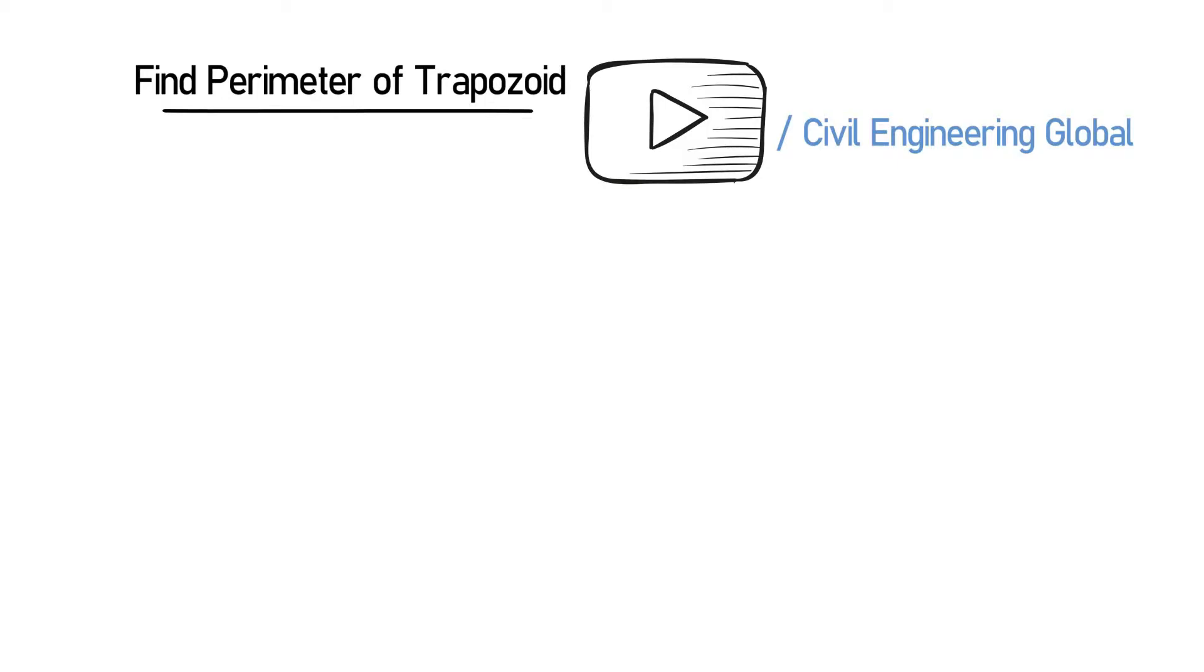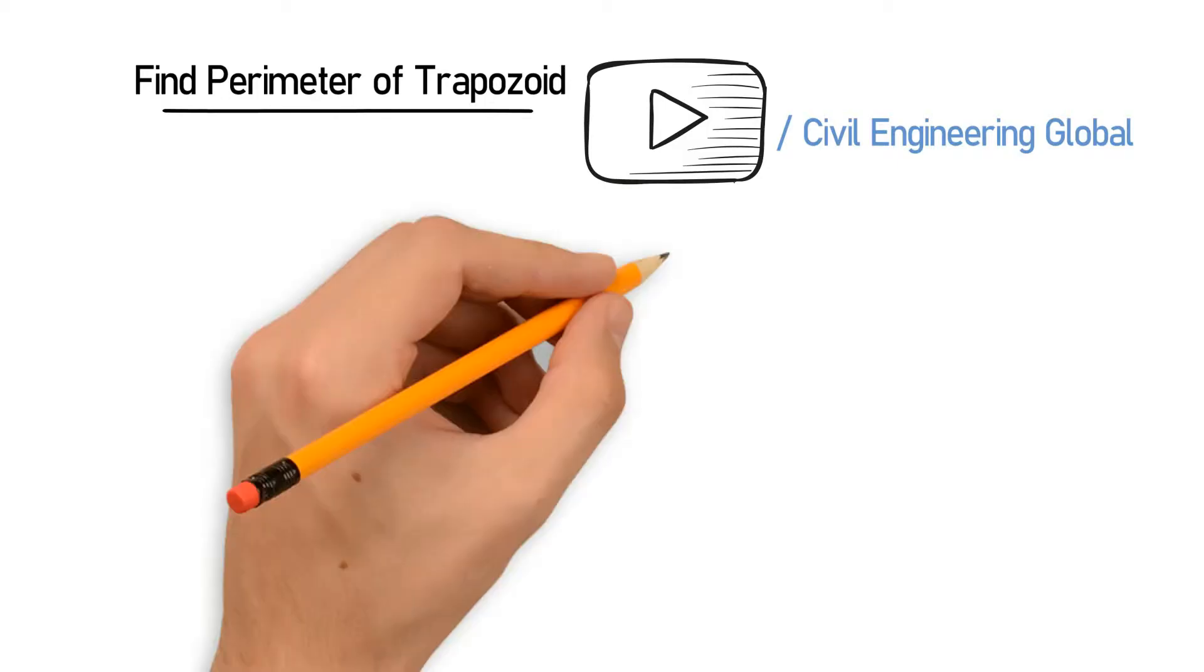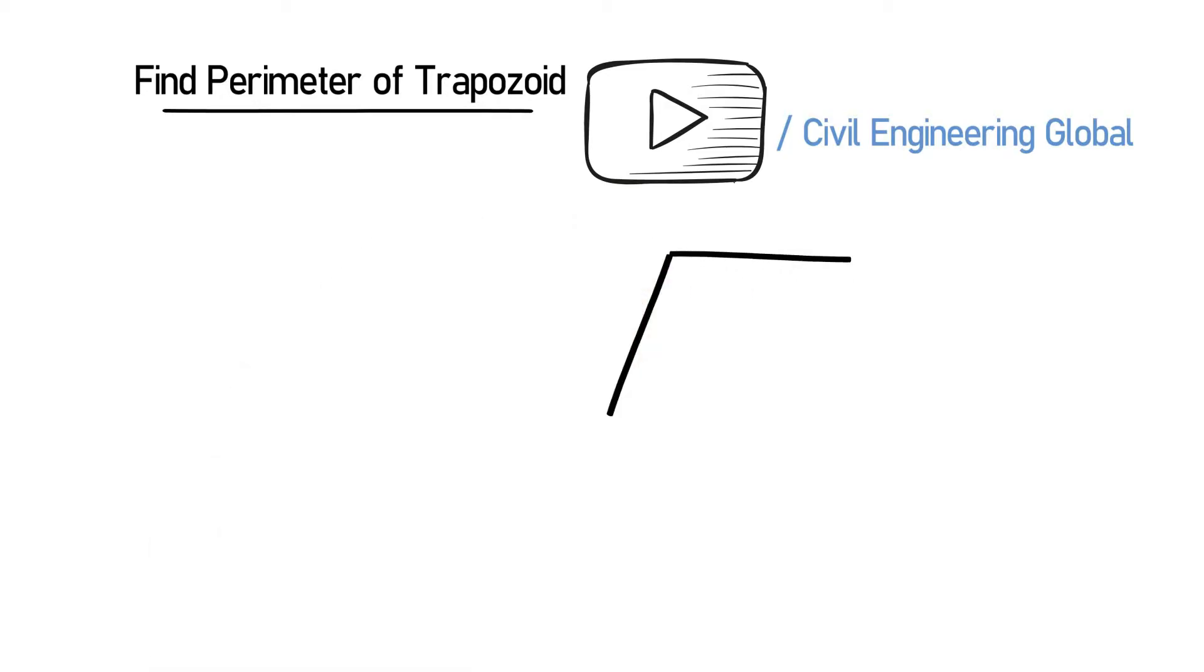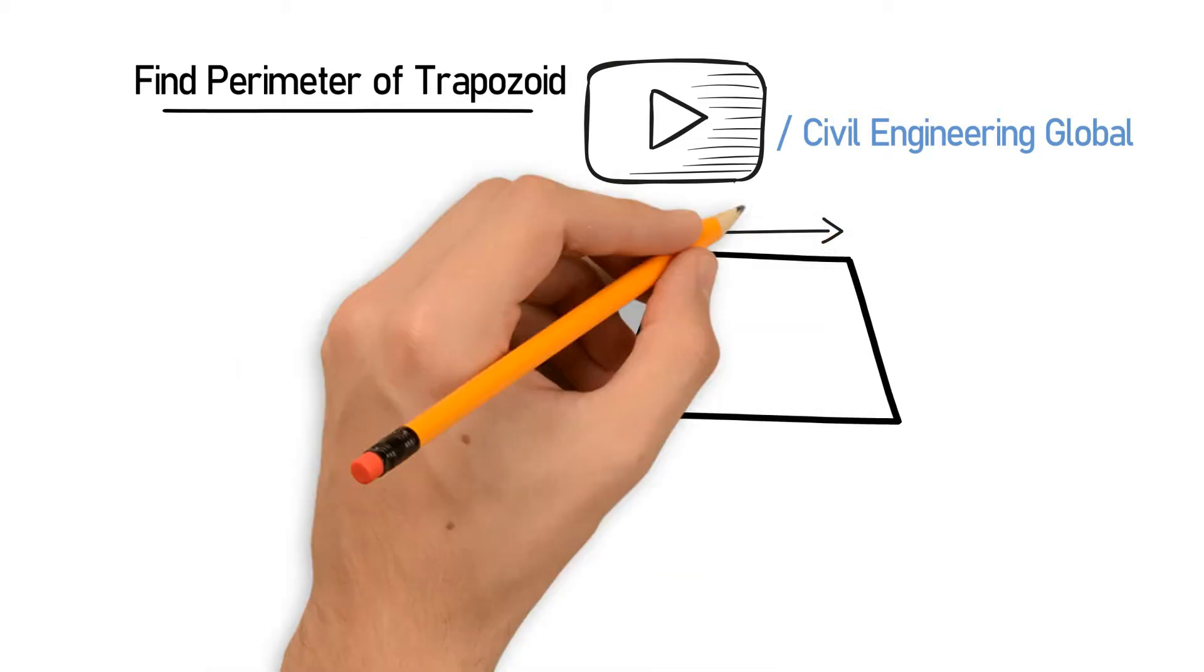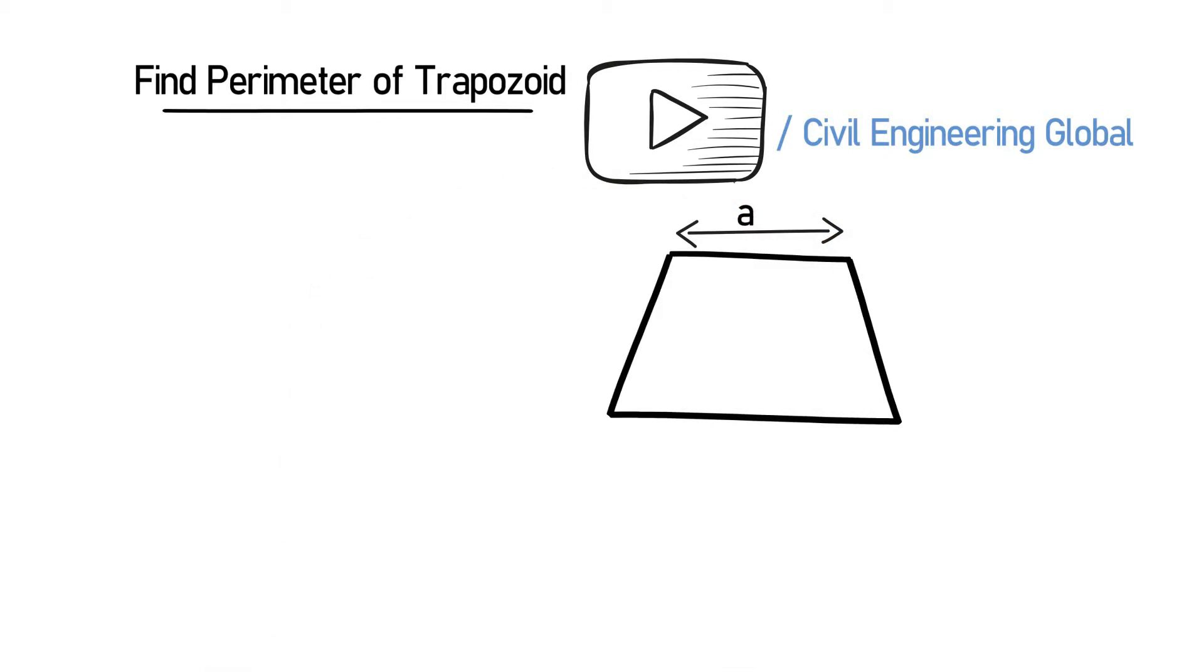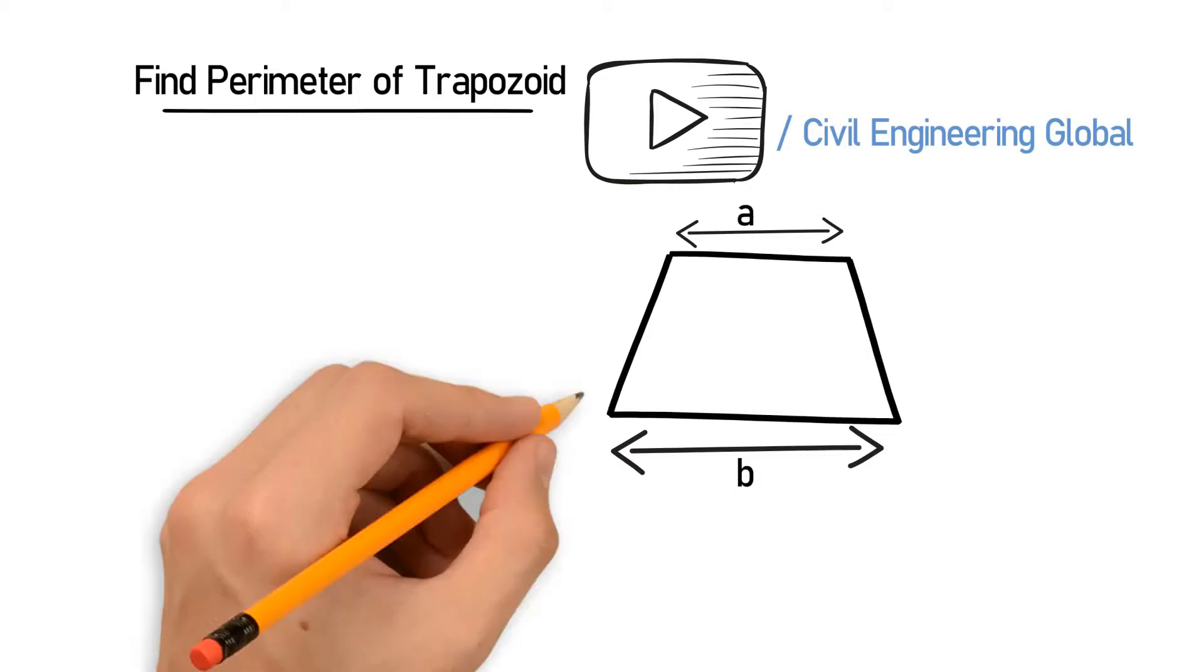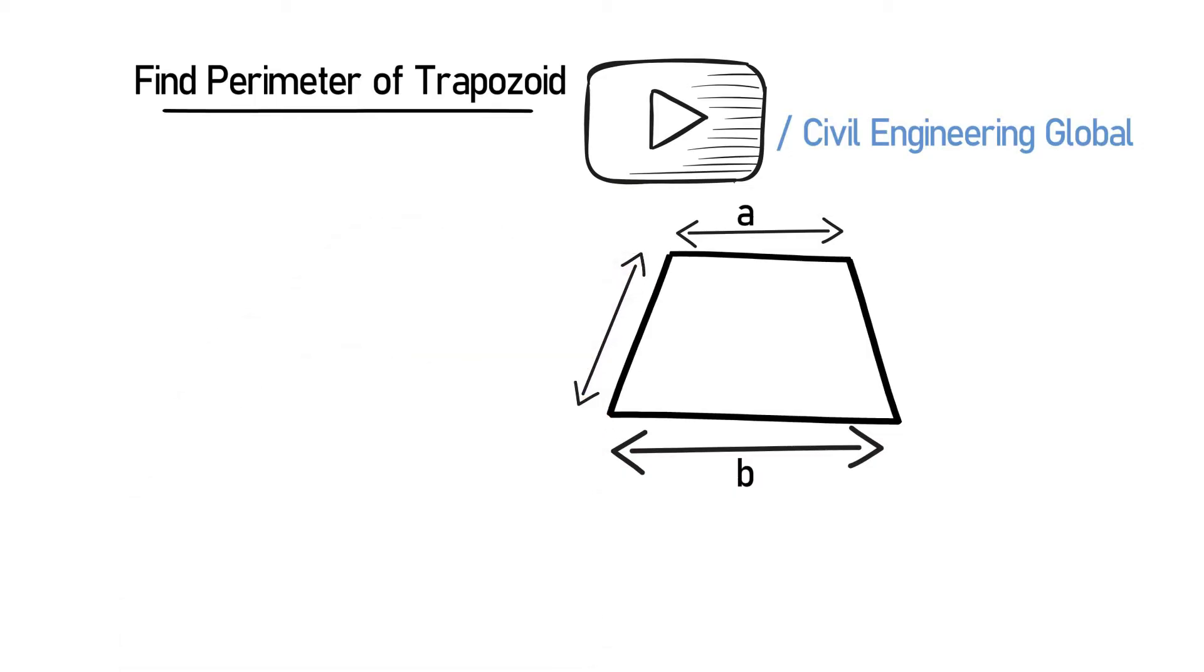So let's draw the trapezoid first. This distance is a and this side is b. This portion is called c and this side is d.